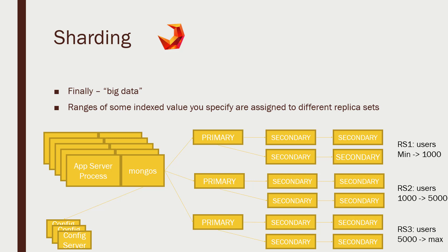For actually scaling out data across more than one server with MongoDB, we need to set up sharding. The way sharding works is that we have multiple replica sets, where each replica set is responsible for some range of values on some indexed value in the database. This requires setting up an index on some unique value on your collection, and that index is used to balance the load of information among multiple replica sets. On each application server, you'll run a process called MongoS, which talks to a collection of configuration servers that knows how things are partitioned, and uses that to figure out which replica set to talk to.